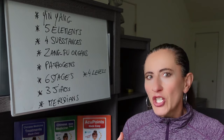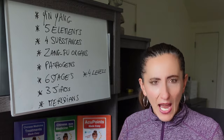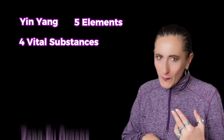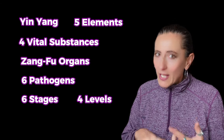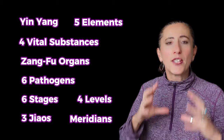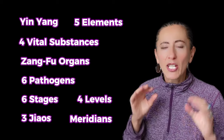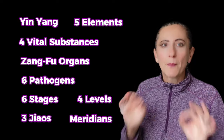In TCM, pattern differentiation and making the right diagnosis can be done according to nine options: the yin-yang theory, the five elements, the four vital substances, the zangfu organs, the pathogens, the six stages, the four levels, the three jiao, and the meridians. These are the nine steps we're going to look at today, and I'm going to show you how easy it is to make a TCM diagnosis using this nine-step framework.